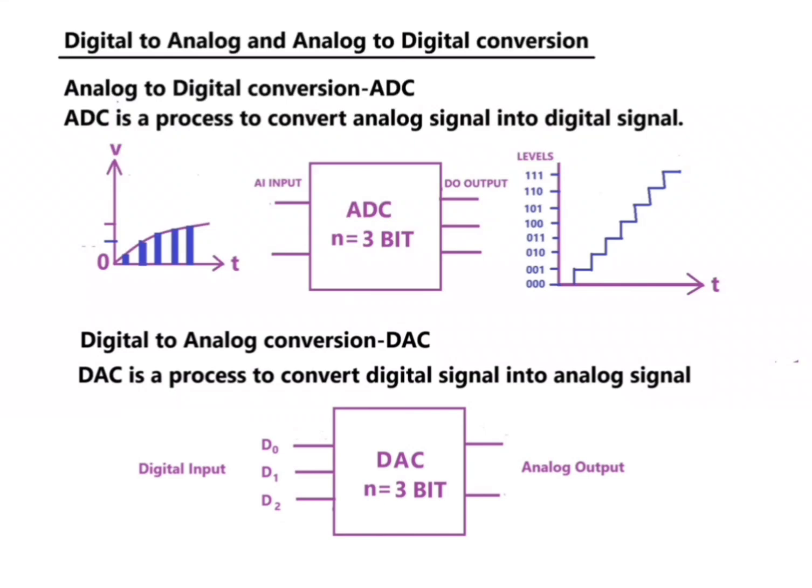Hello. ADC, digital to analog and analog to digital conversion — ADC is a process to convert an analog signal into a digital signal. The block diagram given here shows an analog voltage input signal converted into 3-bit digital codes. DAC is a process to convert digital signal into analog signal.